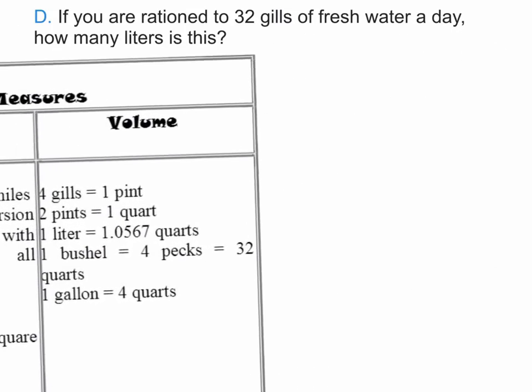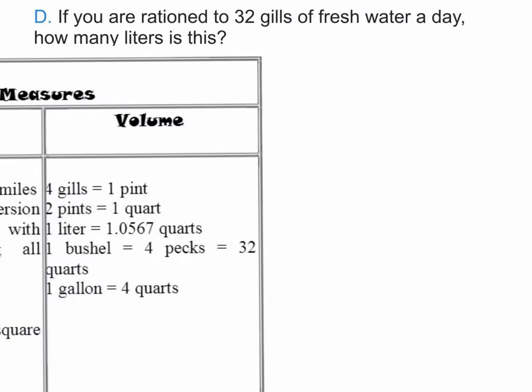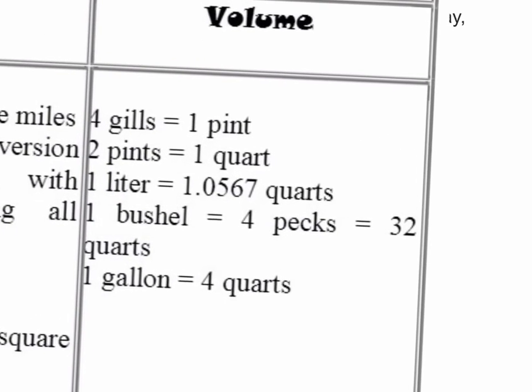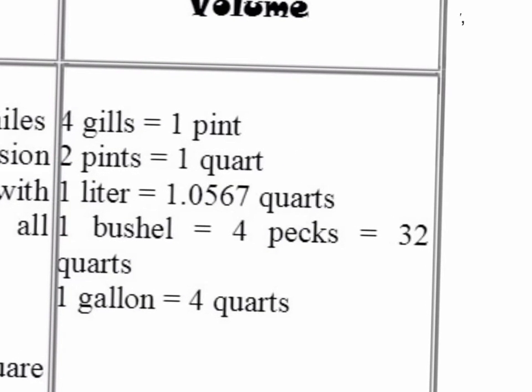And how are we going to get to liters from gills? So when we're looking at our options, I see that we've got gills right here. And I see here we have liters. And how are we going to connect the dots? How are we going to get from gills to liters? Well, I see 1 liter is equivalent to 1.0567 quarts. And I can see that 1 quart is equivalent to 2 pints. And then 1 pint is equivalent to 4 gills. So we're going to connect gills to liters this way.